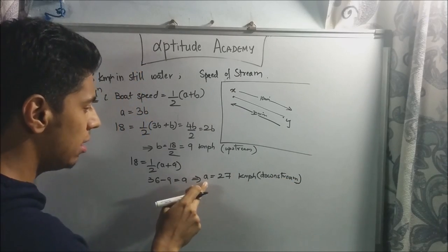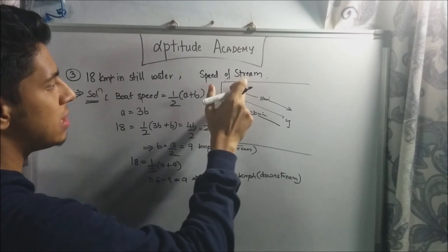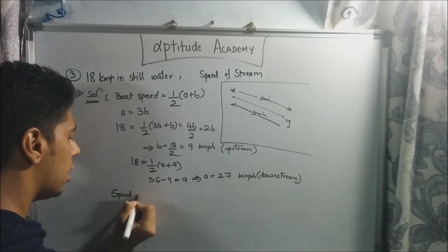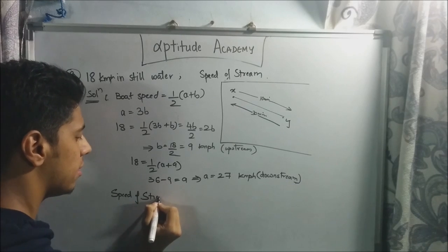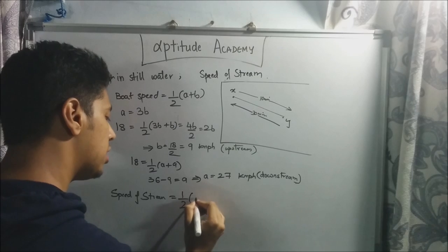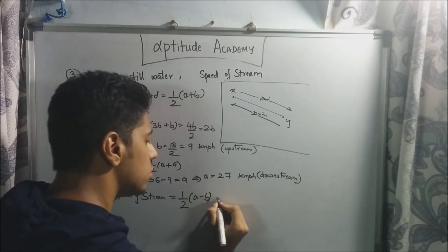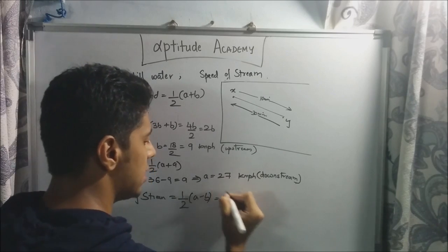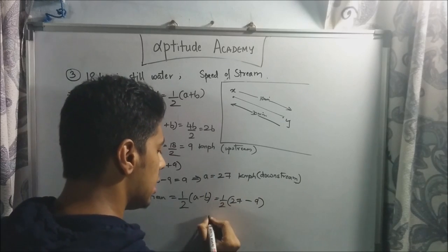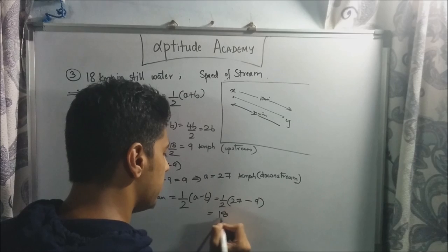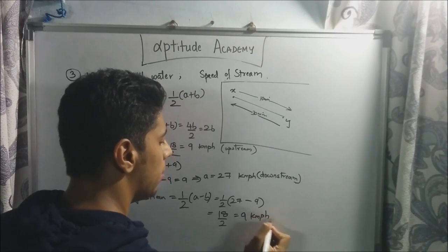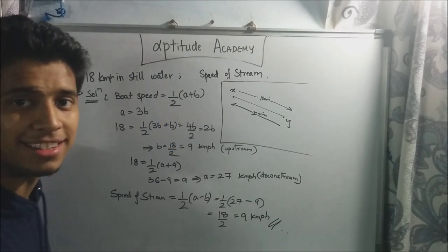Now we've got A equals 27 and B equals 9. Speed of the stream using the shortcut formula is half of A minus B: half of (27 minus 9) equals 18/2, which equals 9 kilometers per hour. This is the answer.